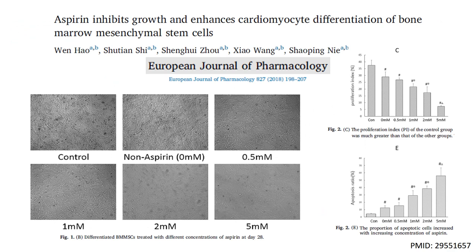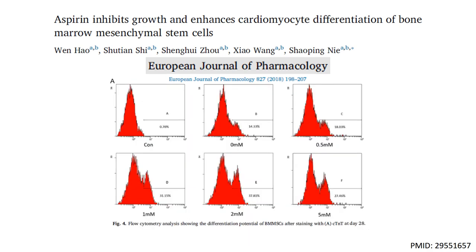A third study published in the European Journal of Pharmacology confirmed the findings of the first two studies. Howe and colleagues demonstrated increasing concentrations of aspirin to inhibit the proliferation of MSCs while increasing the percentage of apoptotic cells. While the authors show increasing aspirin concentration to inhibit MSC growth and promote cell apoptosis, they also show aspirin to enhance cardiomyocyte differentiation. Specifically, increasing concentration of aspirin resulted in greater expression of cardiac troponin T, a critical component of the cardiac muscle contractile unit.